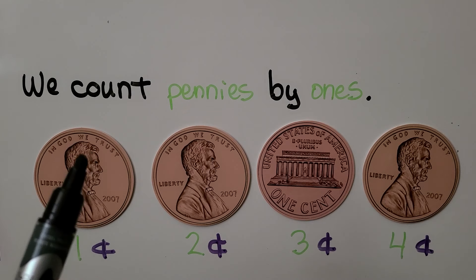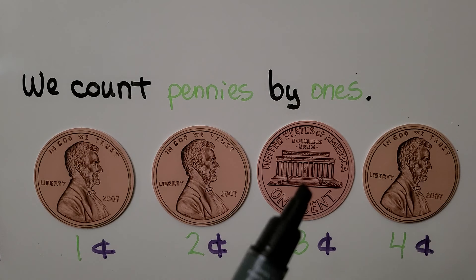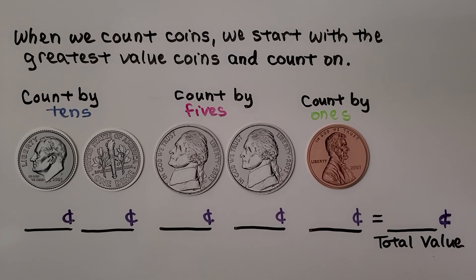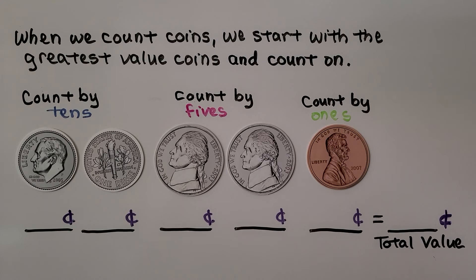Because pennies have a value of 1 cent, we count pennies by 1's: 1, 2, 3, 4 cents.